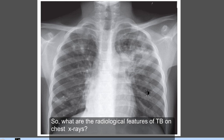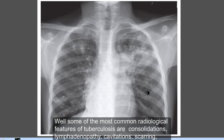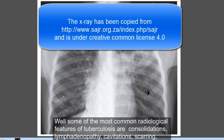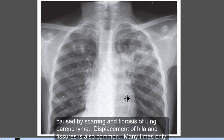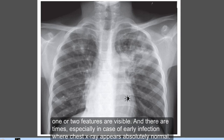What are the radiological features of TB on chest X-rays? Some of the most common radiological features of tuberculosis are consolidations, lymphadenopathy, cavitations, scarring, fibrosis, granulomas, pleural effusions, traction bronchiectasis caused by scarring and fibrosis, and loss of lung volume, also caused by scarring and fibrosis of lung parenchyma.